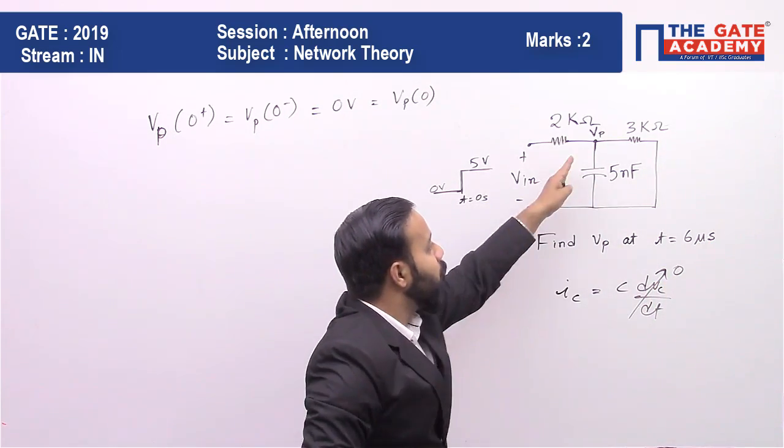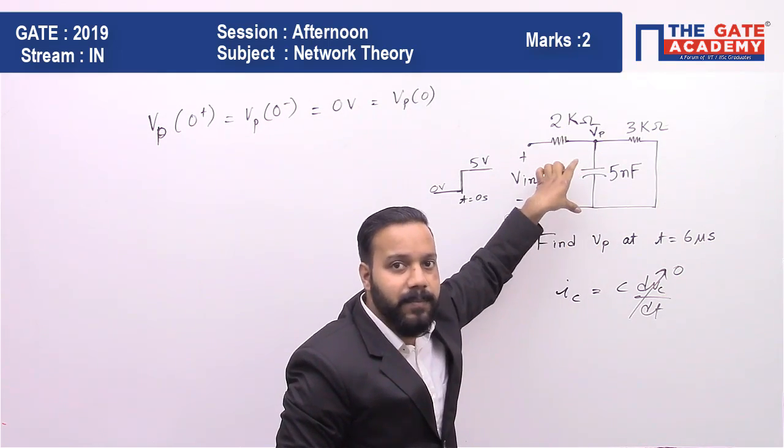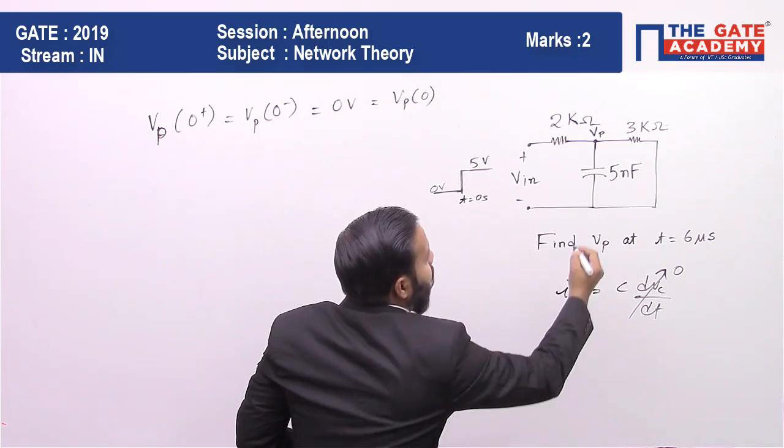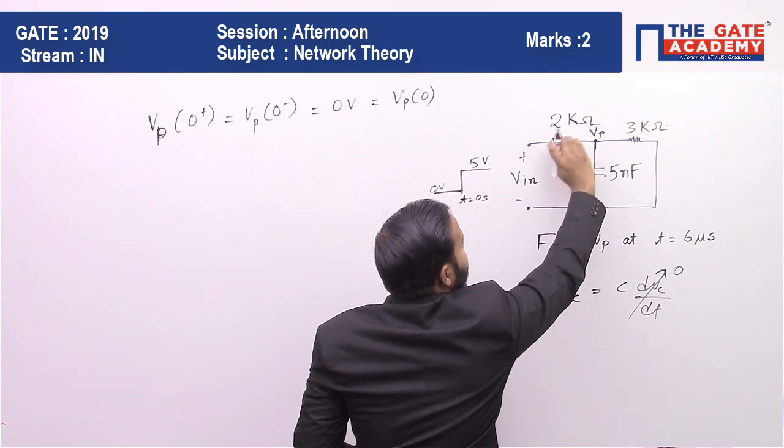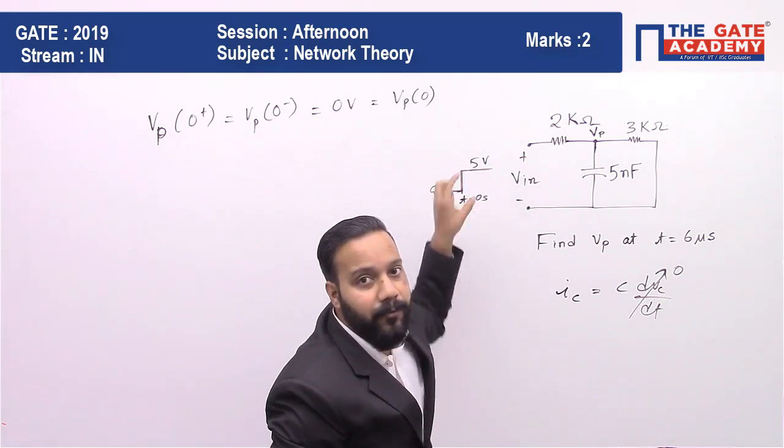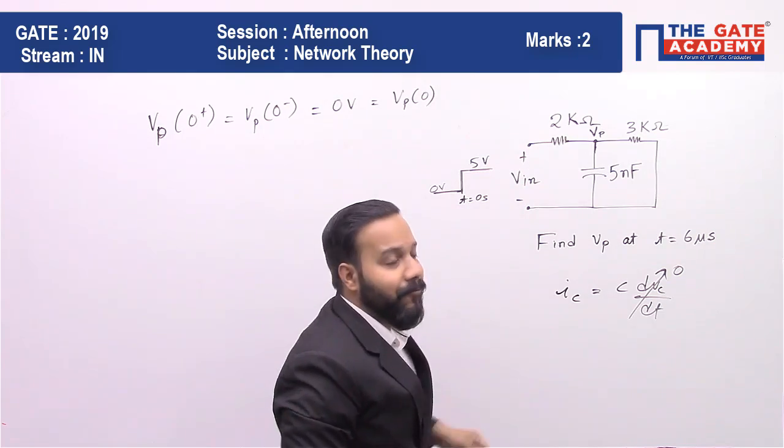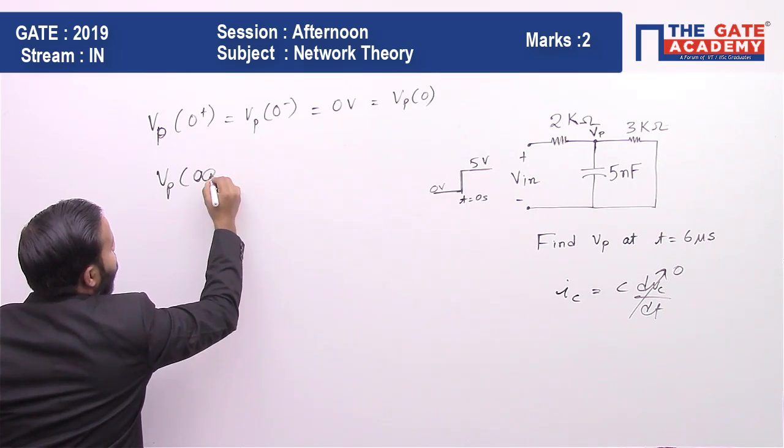No current will be flowing through the capacitor, but it will acquire some voltage that it can charge to the maximum. We can directly apply voltage division and find what part of the 5 volt will be stored here as vp(∞).